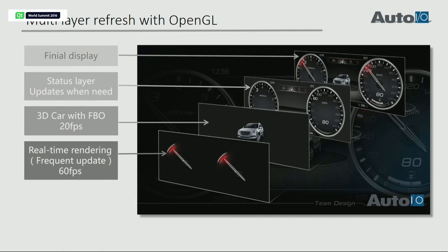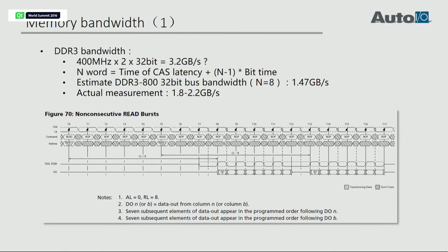Here is another layer, and here is the final layer — the final display looks like this. Now, about the memory bandwidth: on our platform we use the Freescale i.MX6 with DDR3. What is the DDR3 bandwidth? We can calculate it — for DDR3-800, 400 MHz multiplied by 2, multiplied by 32-bit gives us about 3 GB per second. But is that the real memory bandwidth? No, it's just the peak value.